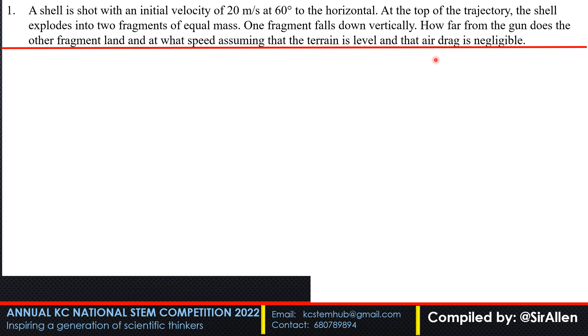We can start with a diagrammatic representation of what is happening. You're projecting a projectile with velocity u at angle theta to the horizontal. We can resolve this initial velocity to its horizontal and vertical components. At the maximum point, the explosion occurs. One particle u1 drops down, and u2 continues in the horizontal trajectory. We can calculate the horizontal velocity u2 using conservation of momentum.